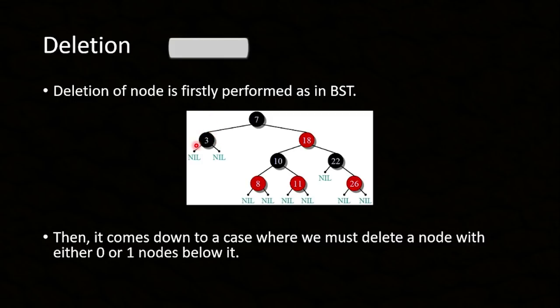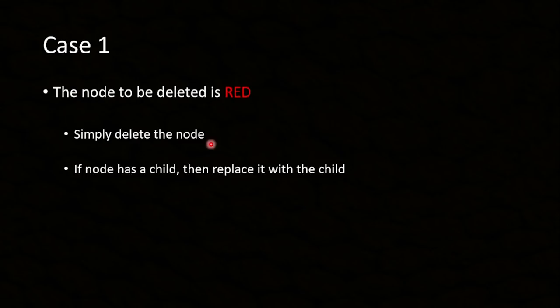So what do I do if I want to delete that part? There are several cases. Firstly, if the node to be deleted is red, this is the easiest case of all — simply delete the node. If the red node has a child, replace it with the child. Why is it simply deleted? Because it will not have any effect on the number of black nodes, so we don't need to worry too much. Since the balance of a red-black tree relies on that property — the golden rules — simply delete it.